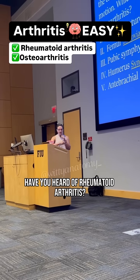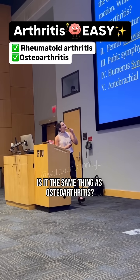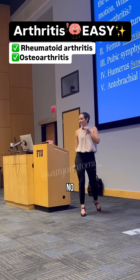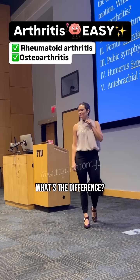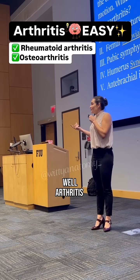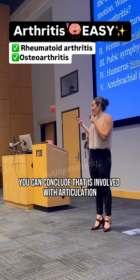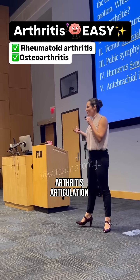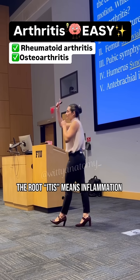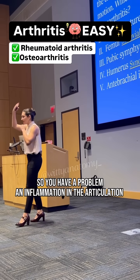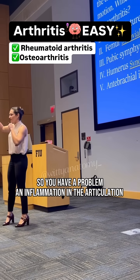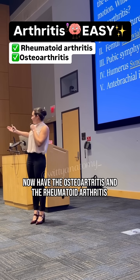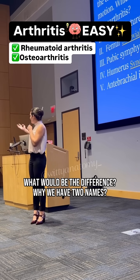Have you heard of rheumatoid arthritis? Is it the same thing as osteoarthritis? What's the difference? Well, 'arthritis' — you can conclude that it is involved with articulation. 'Arth' relates to articulation, and 'itis' means inflammation. So arthritis means inflammation of the articulation. Now we have osteoarthritis and rheumatoid arthritis — what would be the difference?